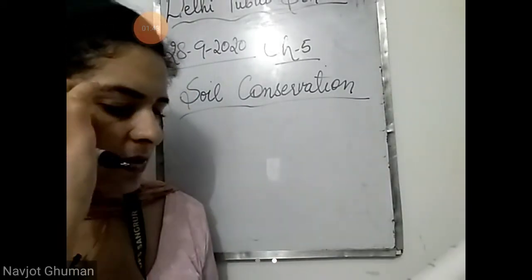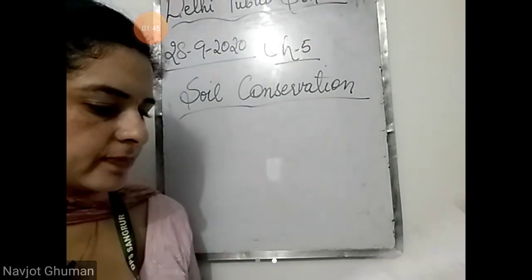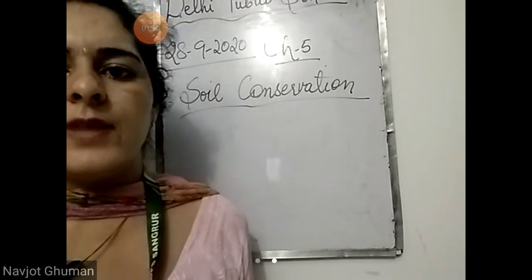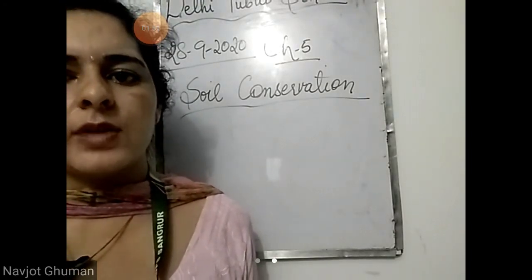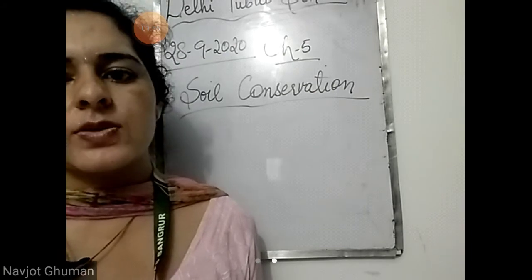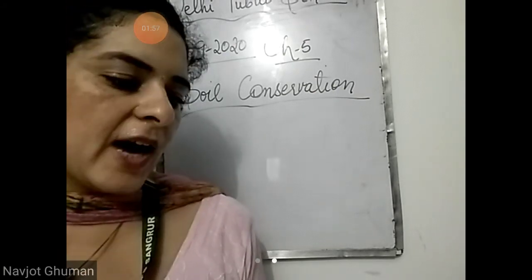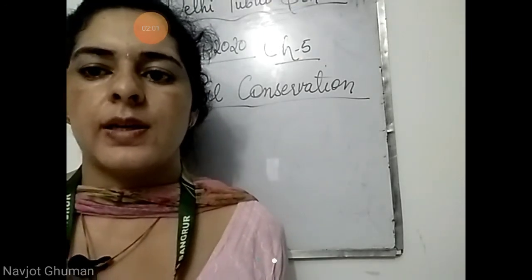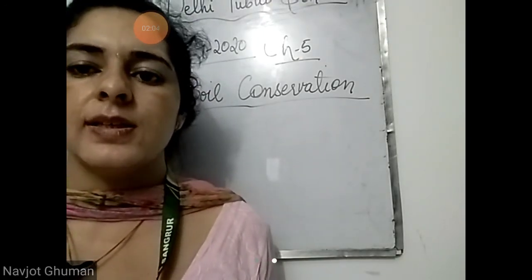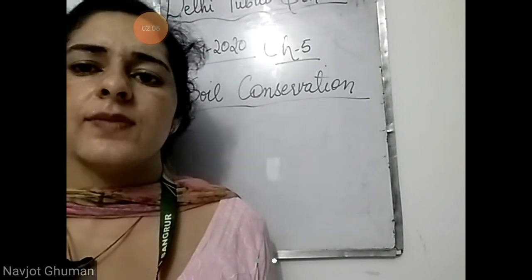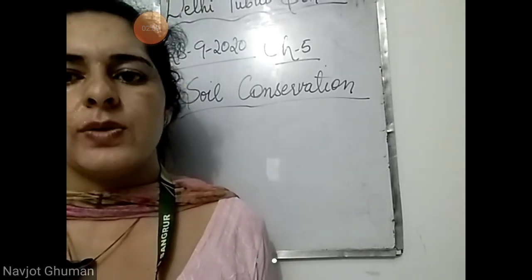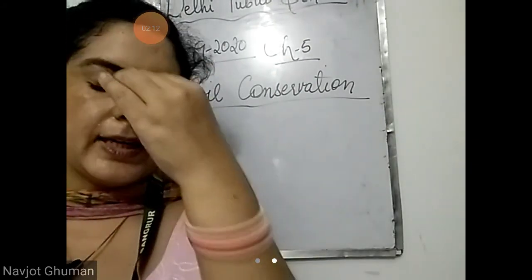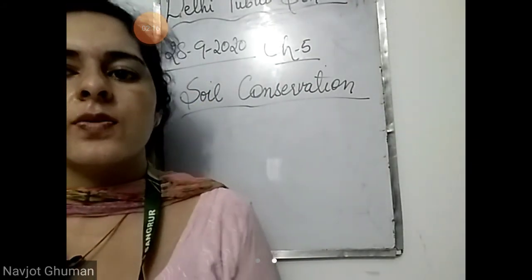Let's discuss question answers of this chapter. What is weathering? How does it form soil? Weathering is the breaking down of rocks into smaller pieces. When rocks break down by the action of wind, water, or the sun's heat, fine powder is formed. This fine powder gets mixed with minerals and dead remains of plants and animals, and then soil is formed.